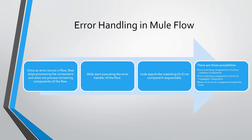There are three possibilities for the search results. First, the first matching component is an On Error Continue component. Second, the first matching component is an On Error Propagate component. And third, none of the On Error components match the error.